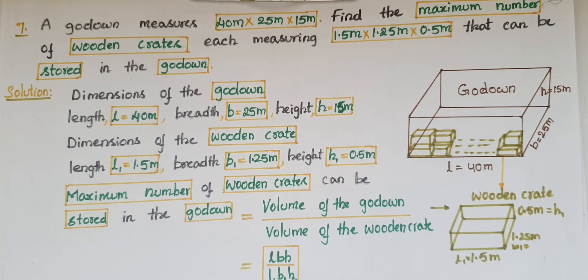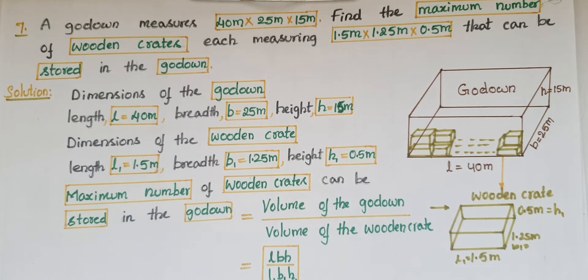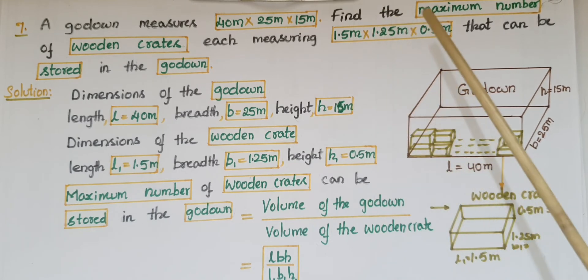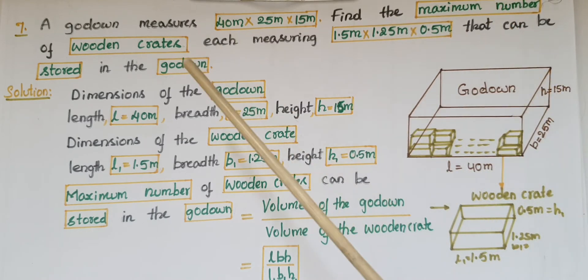Hello everyone, today I am going to tell the solution of the seventh problem from exercise 13.5 on surface areas and volumes from NCERT class 9. A godown measures 40 meters by 25 meters by 15 meters. Find the maximum number of wooden crates, each measuring 1.5 meters by 1.25 meters by 0.5 meters, that can be stored in the godown.